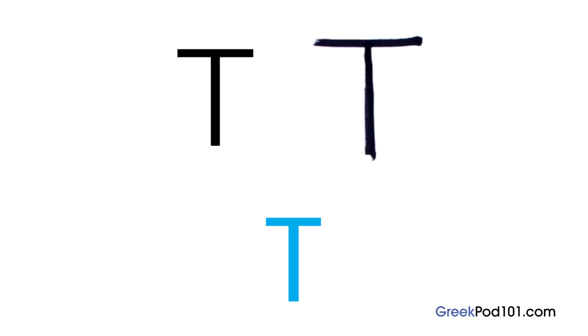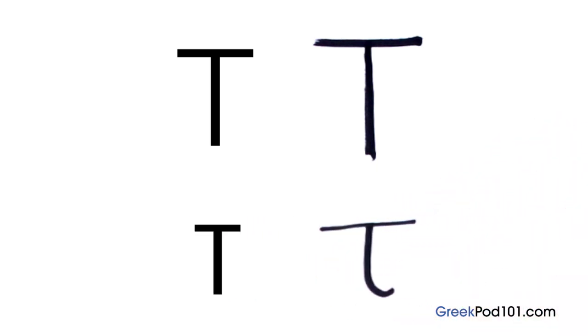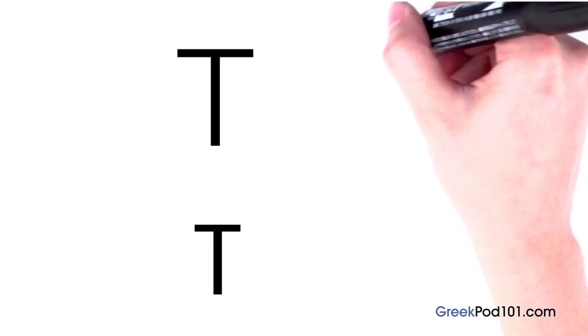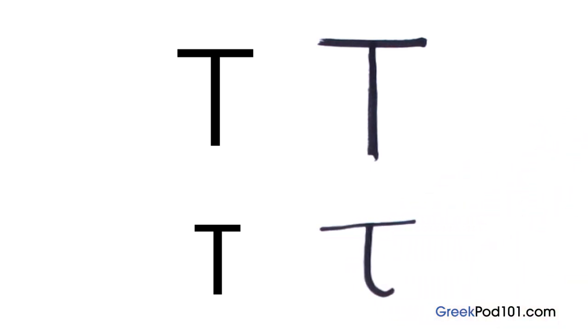When it is handwritten, the shape looks a little different, like this. Taf. Let's do it again. Here is the uppercase form and here is the lowercase form. Did you get it? I'm sure you already knew how to write this, didn't you?